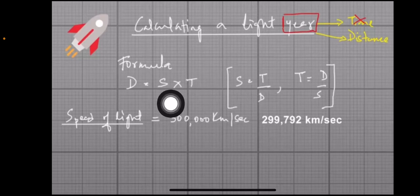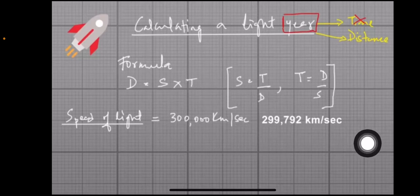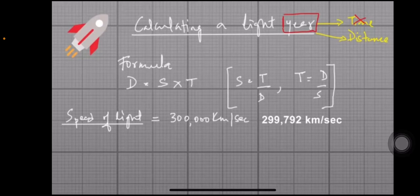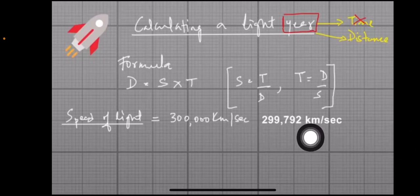That is the rounded-off value. The more precise speed of light is 299,792 kilometers per second. In one second, light can cover 299,792 kilometers.